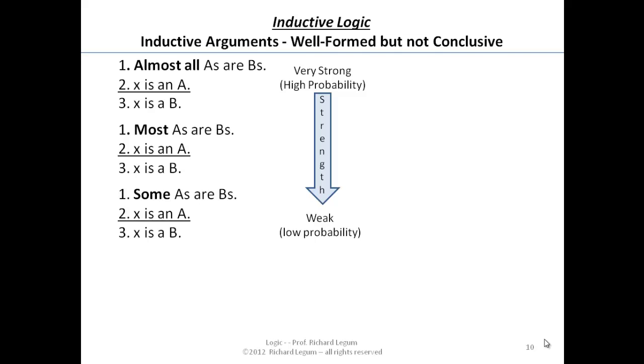Now looking at these patterns of inference that we're dealing with: almost all A's are B's, X is an A, therefore X is a B. Most A's are B's, X is an A, therefore X is a B. Some A's are B's, X is an A, therefore X is a B.